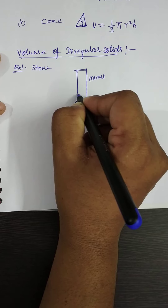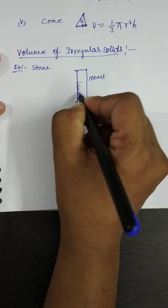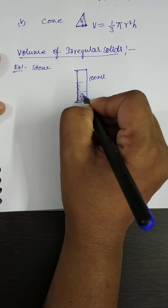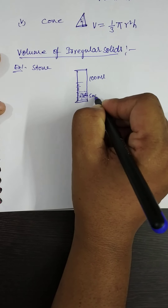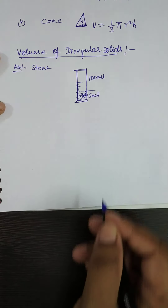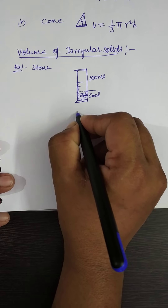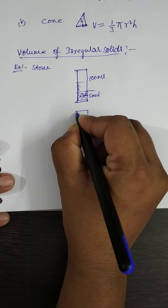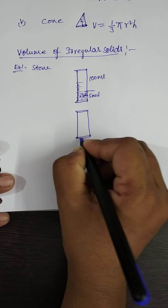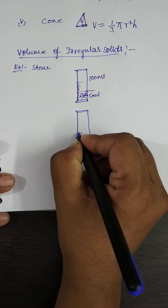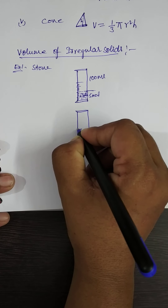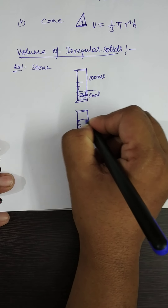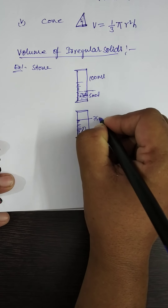The measurements on the jar are shown here. Initially, the jar was filled with water to about 50 ml — the level of the water is at 50 ml. After dropping the stone into the jar, the initial reading was 50 ml, and after dropping the stone, the level will increase to 75 ml.